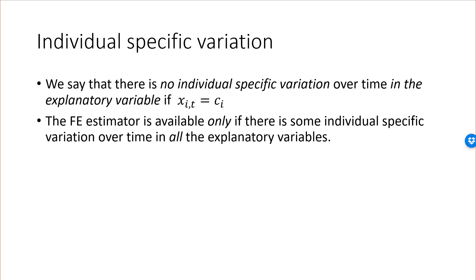The problem for the fixed effect estimator is that it is available only if there is some individual specific variation over time in all of the explanatory variables. If you want to use a fixed effect estimator with variables such as education or a marriage dummy, you must check that at least some individual specific variation exists in each variable. If there is none, you will end up with perfect multicollinearity. Even with a tiny amount of variation over time you can technically perform the fixed effect estimation, but the estimator will be poor due to high multicollinearity. The fixed effect estimator works best when there is a lot of variation over time in each explanatory variable.